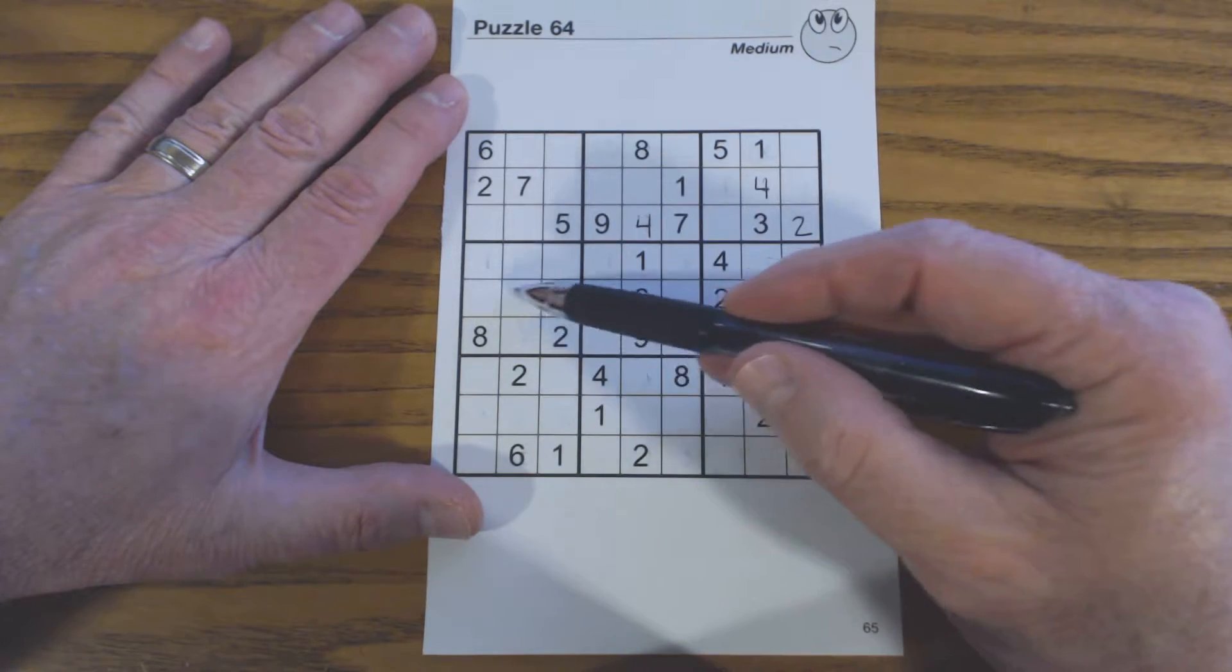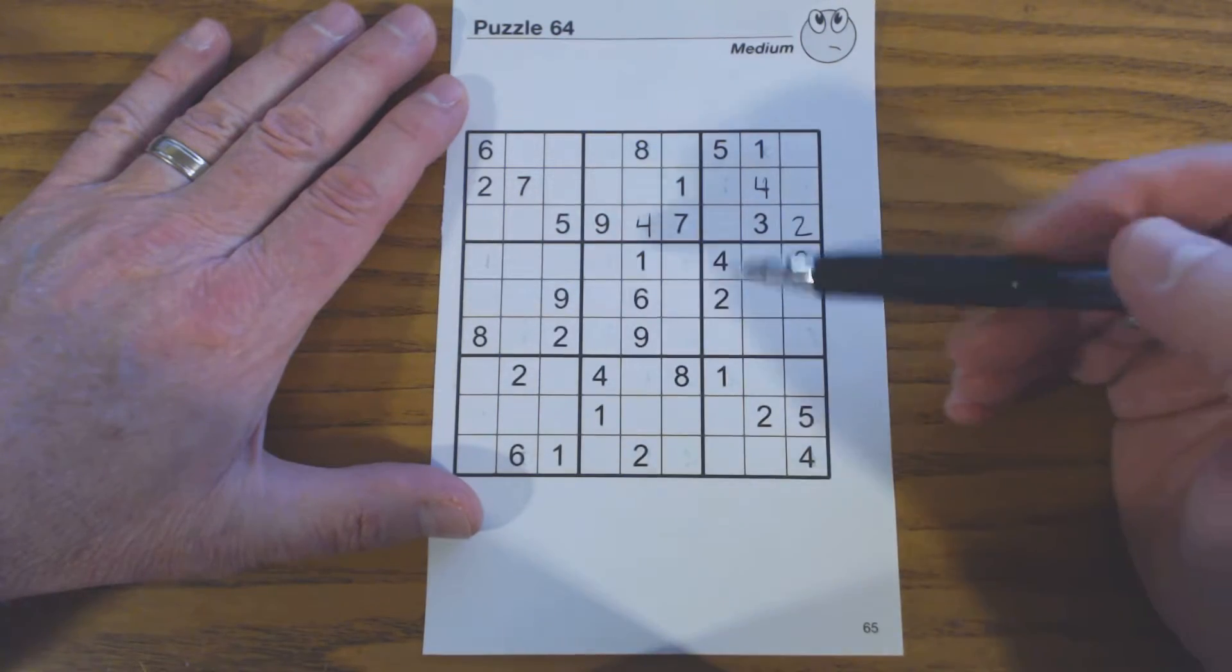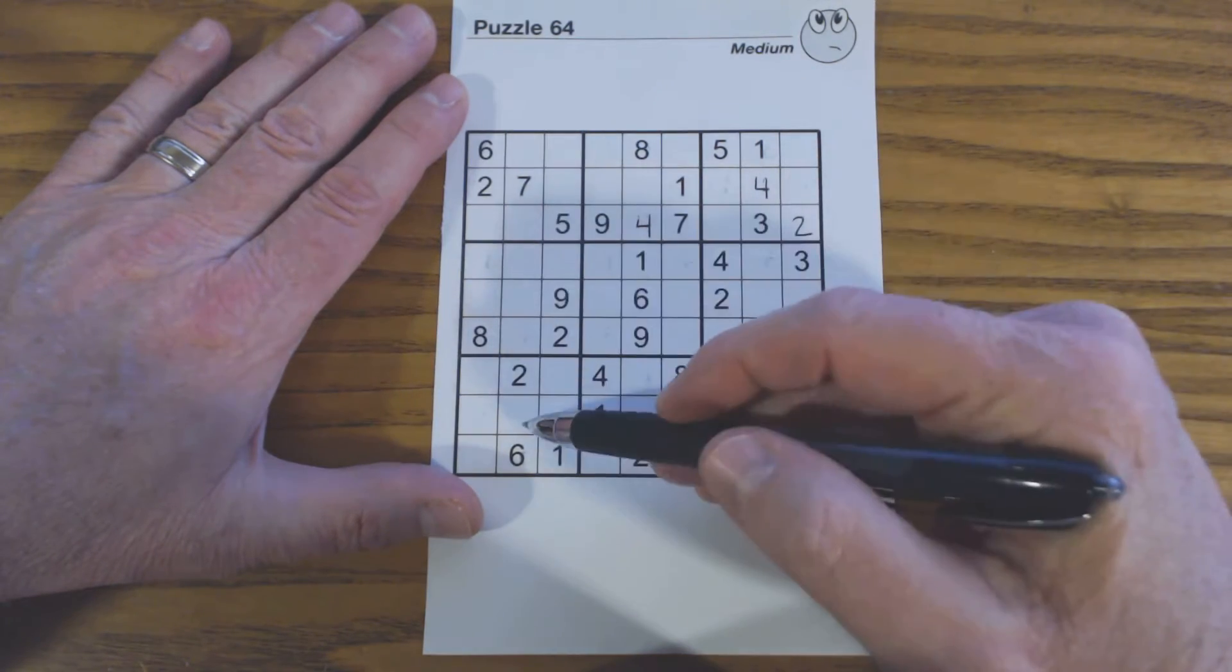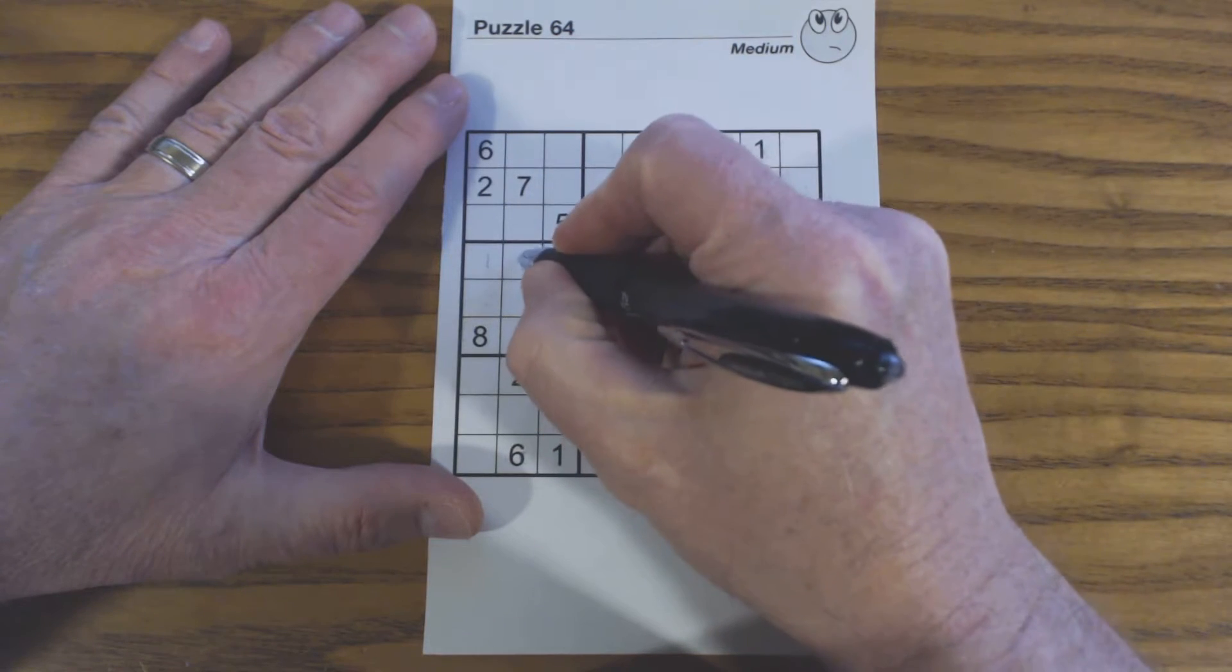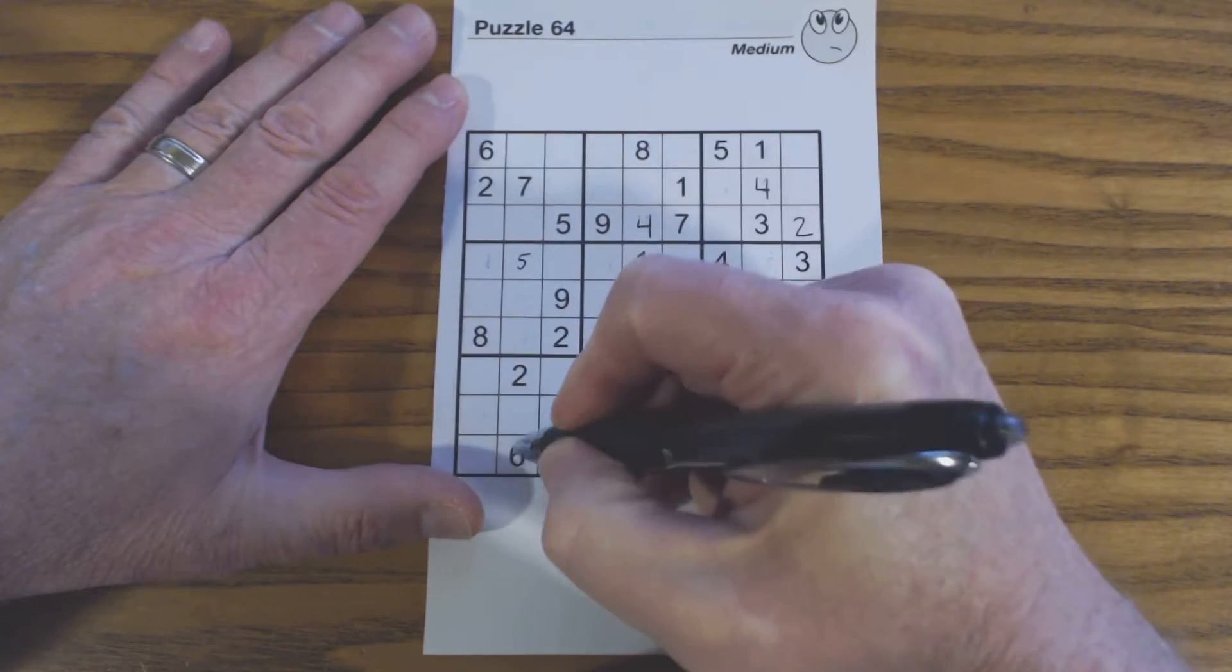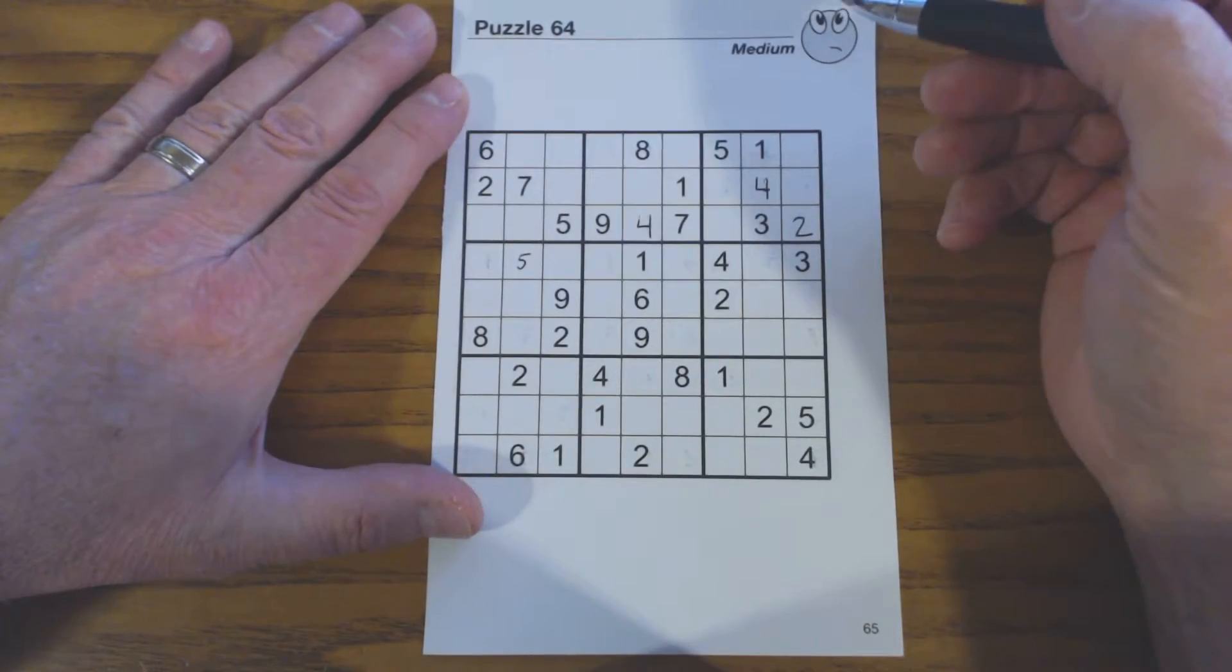Even though we couldn't fill in these triplets once we found them, it gave us more information about this square. And so we can put a 5 right here, because there's a 6 and a 7 in that column.